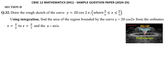Draw the rough sketch of the curve y = 20cos2x, where x lies between π/6 and π/3. And using integration, find the area of the region bounded by this curve from the ordinates x = π/6 to π/3 and the x-axis.